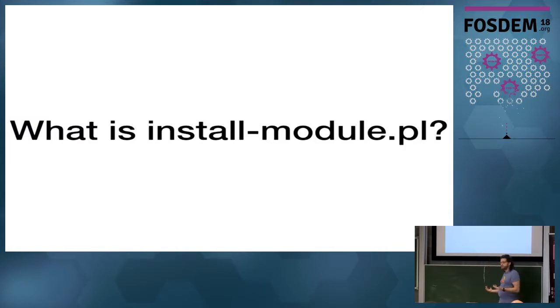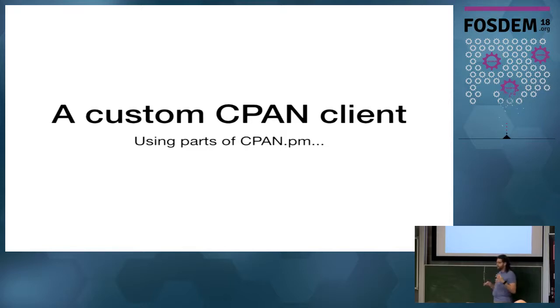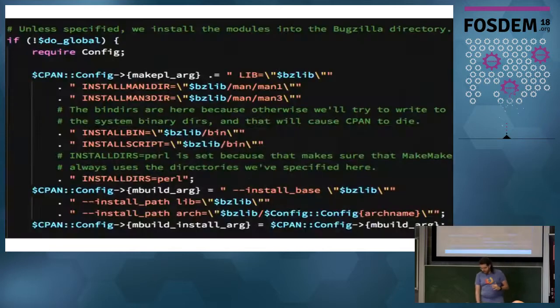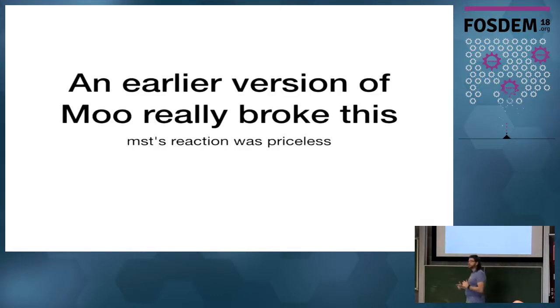So the next headache was install module.pl, which was this thing that the documentation recommended to not use, but they still shipped with it. What it was, was a custom CPAN client. It installed stuff into the directory on the root called lib. So I wanted to point out that the code for Bugzilla is in the root. And everything that we used to be every third party dependency was in lib. We had a really fun experience with Moo because Moo thought that all of our code in lib was first party.